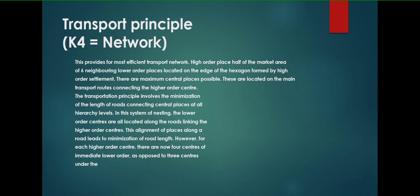Then comes K4 network, transportation network or transport principle. This was just made to provide an efficient network in Germany. This provides the most efficient network all over the world if we use this network. In this, higher order place will be in center and the network will work according to a hexagonal shape in all the areas, in all the six spaces, and this principle will work.